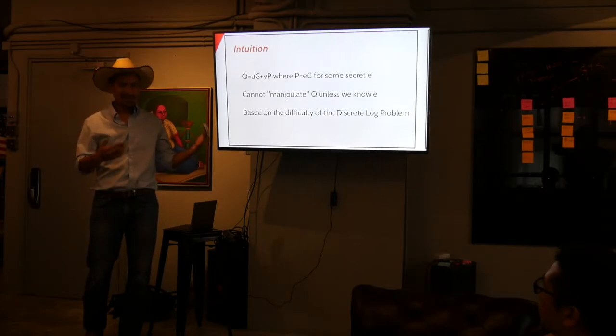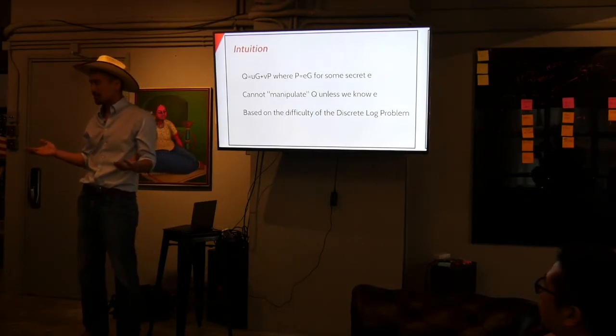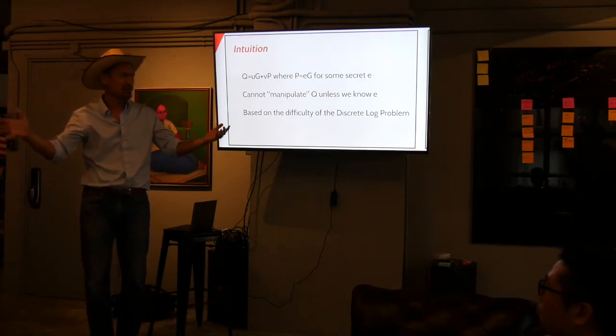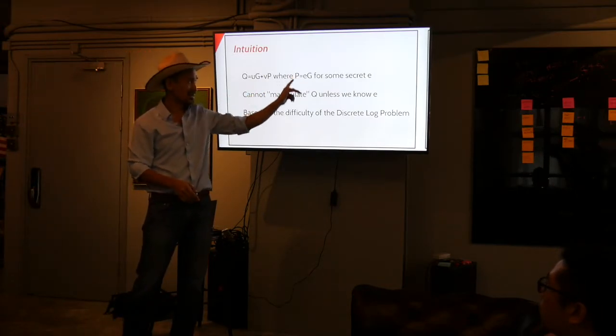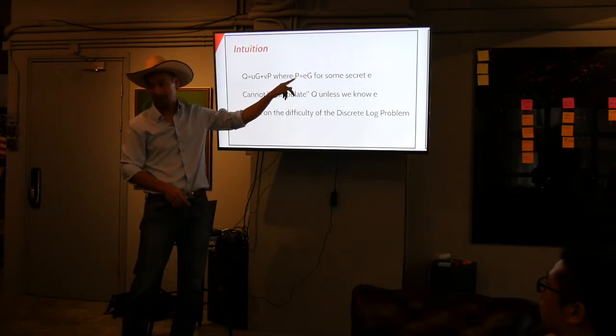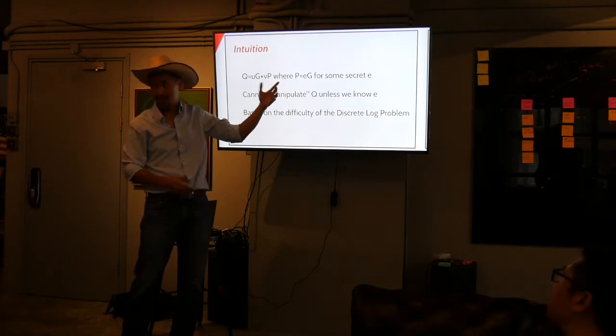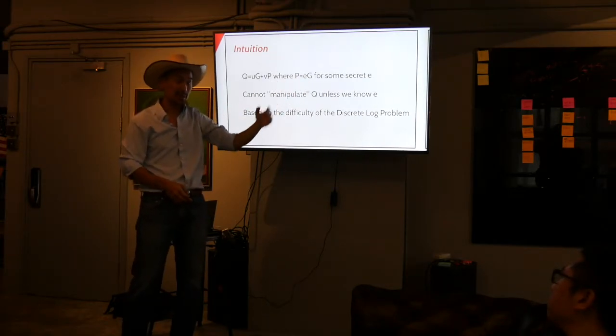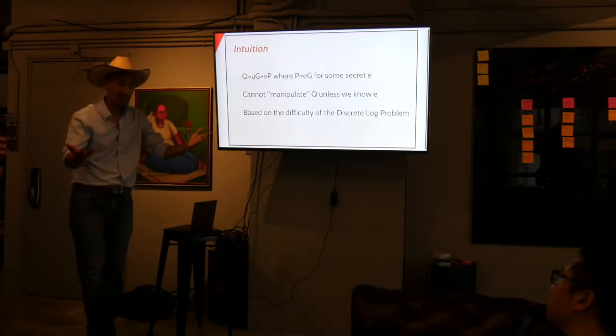It's asymmetric in that way. And that's where the security of everything sort of comes from. And generally, with this sum UG plus VP, we can't really manipulate that sum unless we know how G and P are related. That is, unless we know E. E is our secret. That's our private key. Unless we know the private key, we can't manipulate this sum. That's at the heart of ECDSA. And it's based on the difficulty of the discrete log problem. Who's familiar with the discrete log problem? Okay, yeah. So if you don't know the discrete log problem, it's basically what I said here. Which is that if you know E, you can get P. But if you know P, you can't get E. That's it. If you know the public key, you can't get the private key. But if you know the private key, you can get the public key. Right? That's the discrete log problem in Bitcoin.